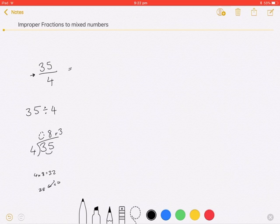So that means that I've got 8 wholes. This is my 8 wholes. And I've got 3 out of 4 left over. 8 wholes and 3 quarters. That's exactly what that means.